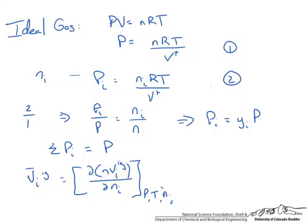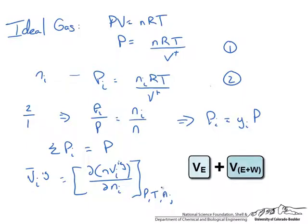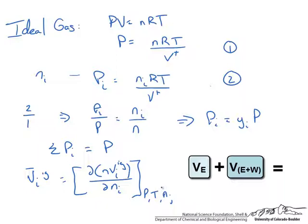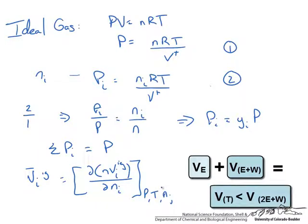This is an abstract kind of equation, but if you think about adding ethanol to an equal molar water-ethanol solution, you might assume that the change in total volume would just be the volume of the ethanol added. This isn't true because in a real solution, interactions between ethanol and water molecules change the partial molar volume of each species, thus affecting the total volume.